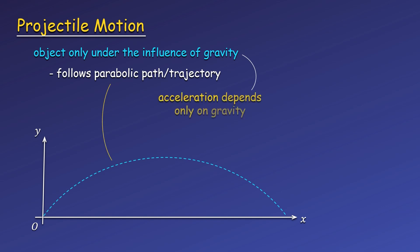When we say an object is moving only under the influence of gravity, we mean the acceleration is due to gravity. In this case, gravity still only acts downward, so there is no acceleration in the horizontal direction or x direction. The acceleration in the y direction is still downward, and it still has a magnitude of little g, or gravitational acceleration.